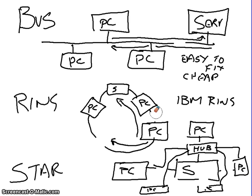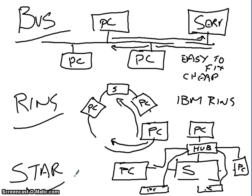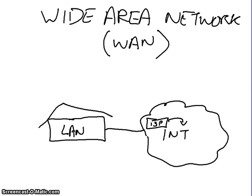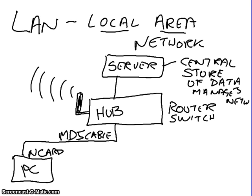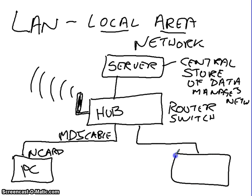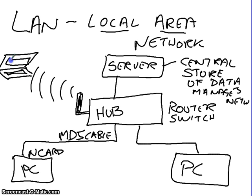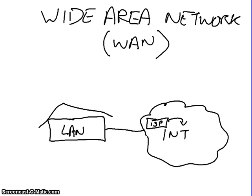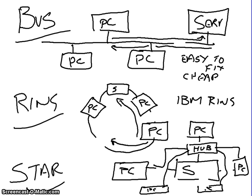For the exam, you need to know what the three main topologies are — bus, ring, and star. You also need to know the kit required to set up a network: the server, the hub, the cable, the network cards, and the router or switch. The server is the central store of everything and manages all the network. Remember that a hub can connect more than one PC, and you can also have wireless hubs for laptops and iPads. Remember the terms LAN and WAN and what they stand for — they're typical exam questions. Okay, that's the first lesson in networking.